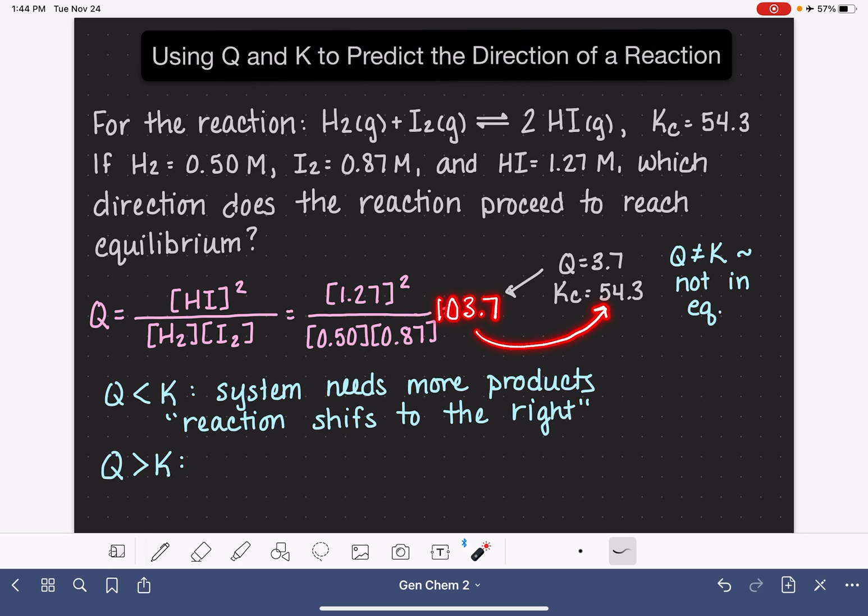If the number is larger than K, if it's too big, then what we need to do is decrease the amount of products or increase the amount of reactants. So if Q is larger than K, this just means that the system needs less product.